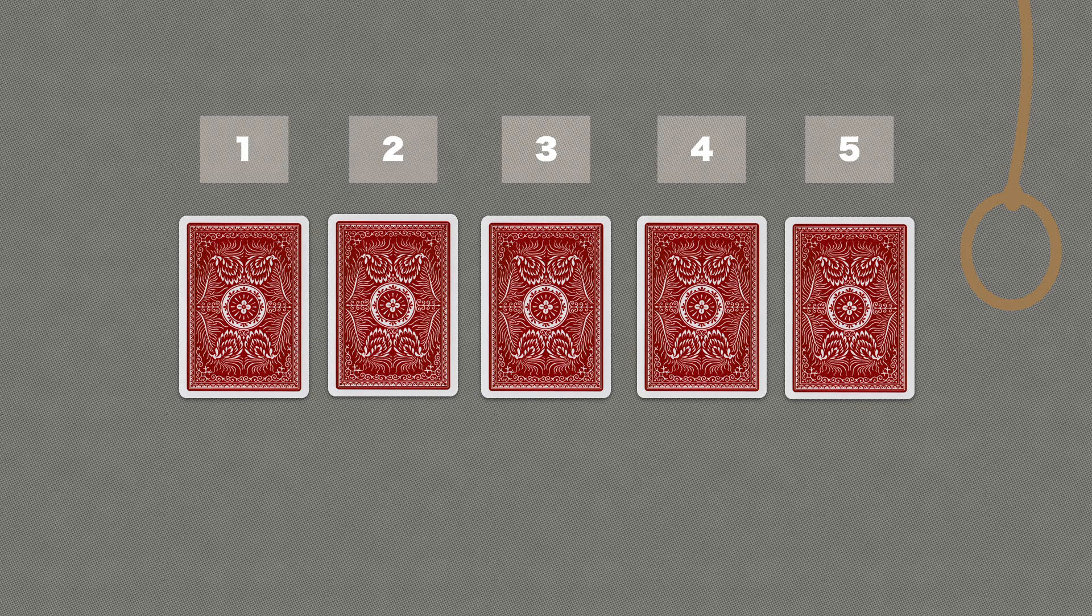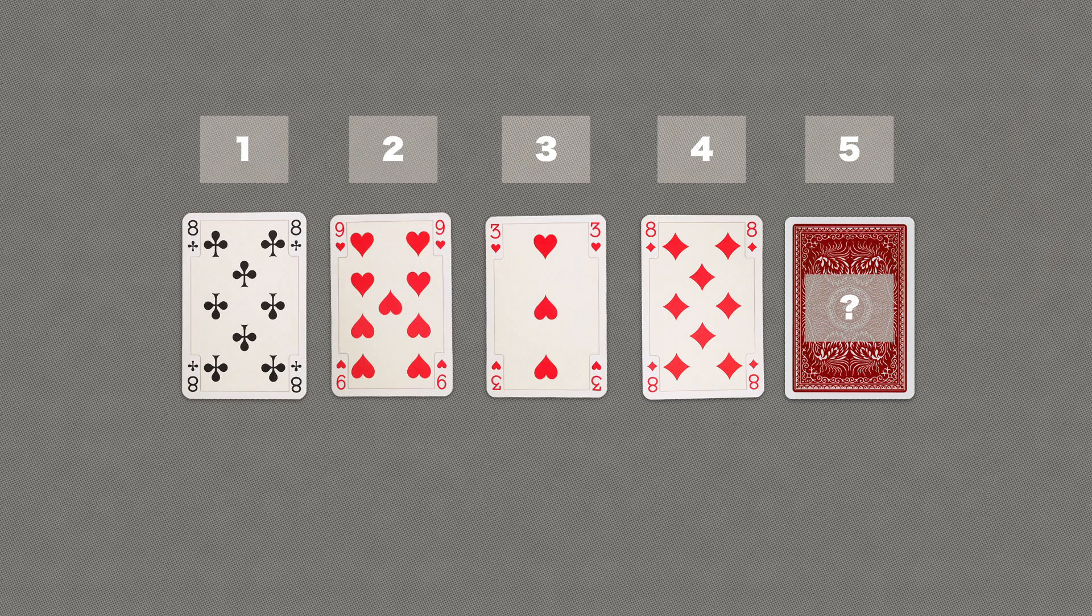You will quickly realize, like the prisoner did, that in a situation with only one option left, you would in fact know with 100% certainty that the next card must be the jack. At this point, one of two things will happen.